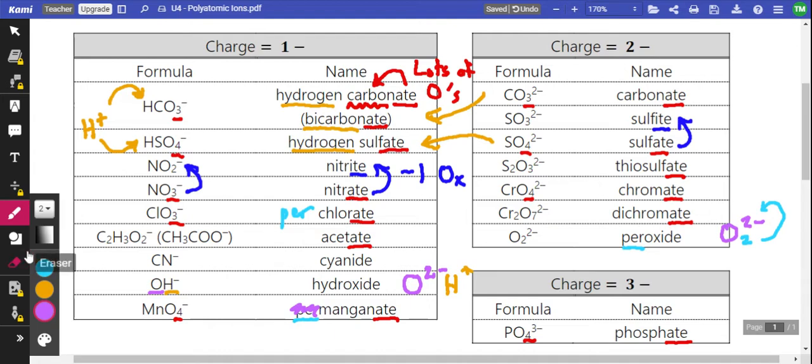So I wouldn't worry too much about the per. It's not one of the more helpful prefixes to know and be like, oh, that was, okay, that was one less oxygen or something. Especially because it's only showing up once on our list.